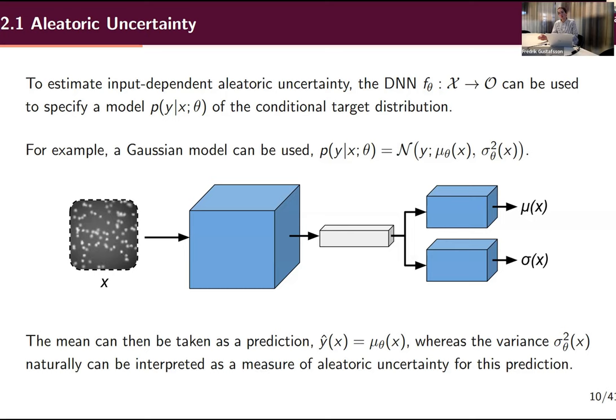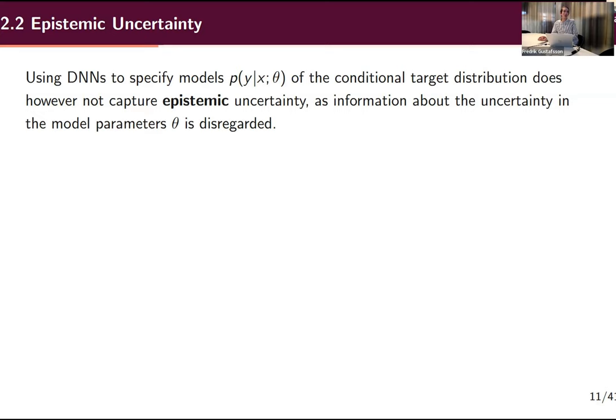Estimating aleatoric uncertainty is conceptually quite straightforward in principle. Estimating epistemic uncertainty is much more challenging, especially for DNNs with millions of parameters. It's not enough to model p(y|x) to capture epistemic uncertainty because you completely disregard the uncertainty in the model parameters theta.